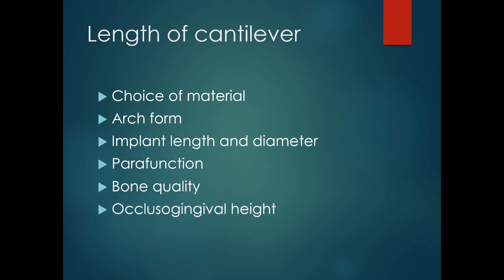The next factor is occluso-gingival height — the crown height with a lateral load acts as a vertical cantilever called a vertical offset, and it is a magnifier of stress at the implant-to-bone interface. Finally, the opposing arch — whether natural tooth or an implant-supported restoration — also influences the length of the cantilever.